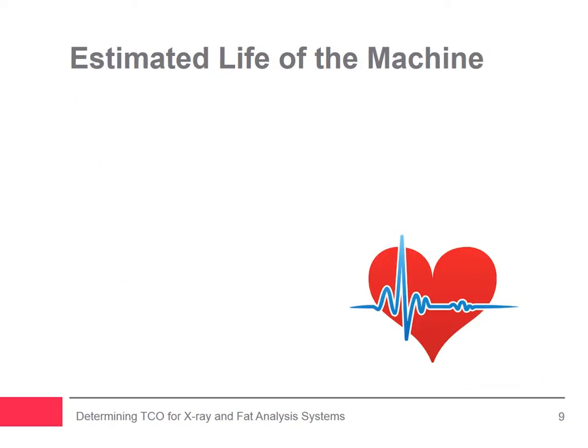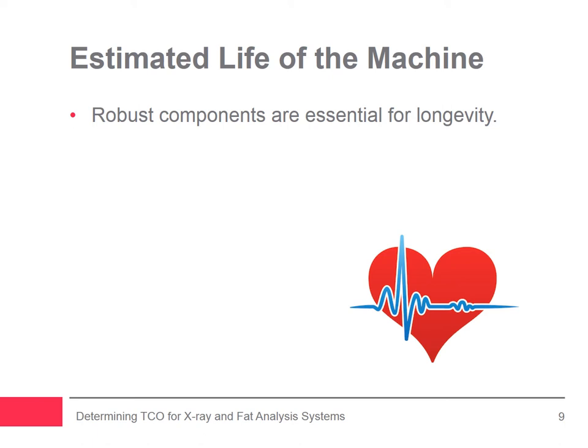The fourth variable is the estimated life of the machine. Machines built with robust components are designed for longevity. X-ray or FA machines that are constructed with a particular processing or manufacturing environment in mind meet industry guidelines, including those for hygienic or sanitary design. As such, those components can withstand challenges in those environments and achieve more effective and often faster operation and sanitation, minimizing downtime and boosting efficiency.